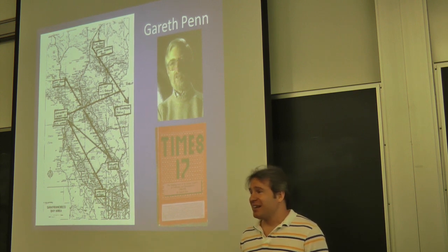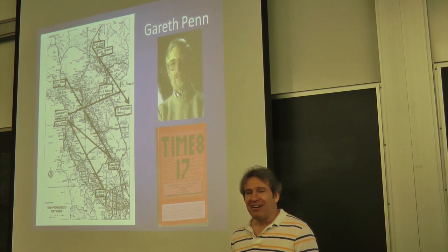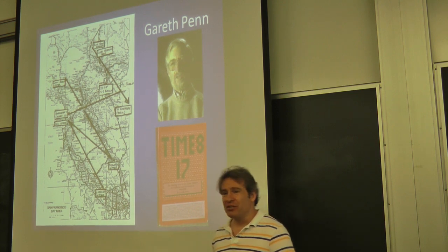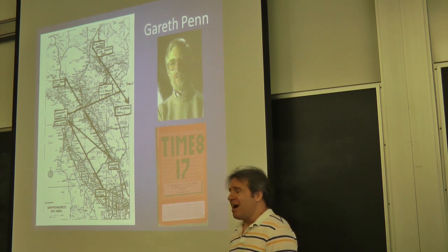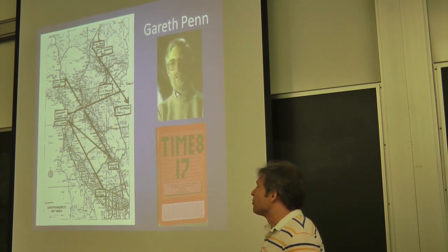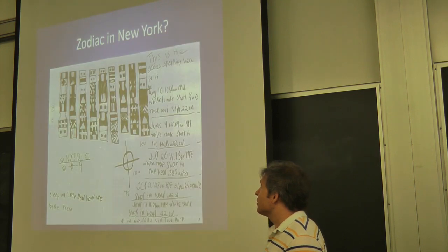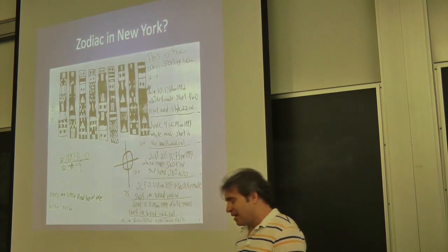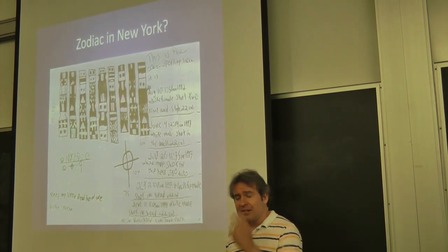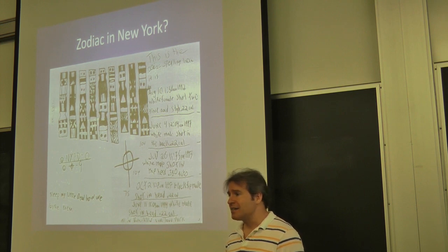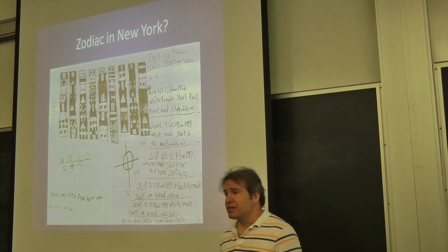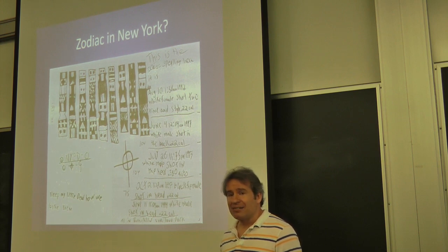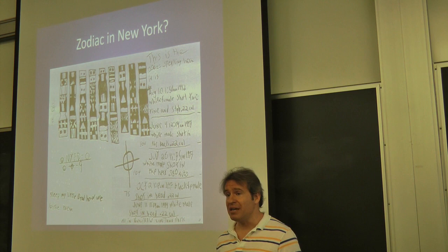So you've got to imagine if the guy's innocent, as I believe, how this must feel to have somebody accusing you of being this famous killer. But Penn's convinced he's the guy. Whoever the murderer is, I think this radian theory is interesting. Now, in the 1990s, Zodiac was active in late 60s, early 70s. In the 1990s, a Zodiac showed up in New York. He was killing people in Manhattan. Is this the same guy? He was never caught. It could be.